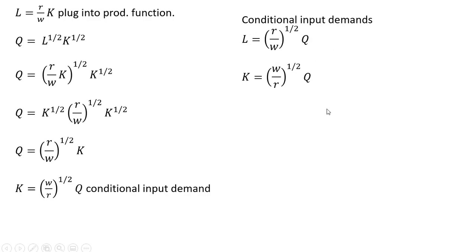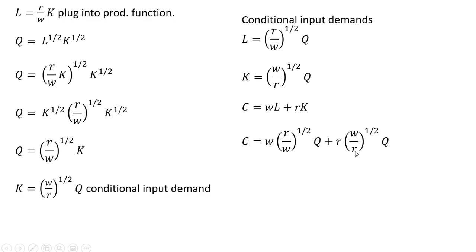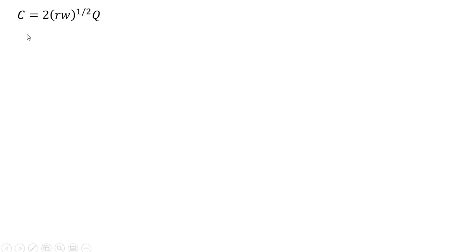Here are our two conditional input demands. Let's form the cost function. We have the firm's total cost — where we have L, we replace it with the conditional demand for L, and where we have K, we replace it with the conditional demand for K. Making those substitutions into the cost function and simplifying, W divided by W to the one-half is just W to the one-half, and R divided by R to the one-half is just R to the one-half. Adding up these two terms, we have our cost function.